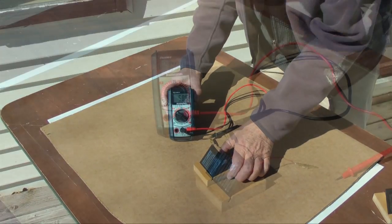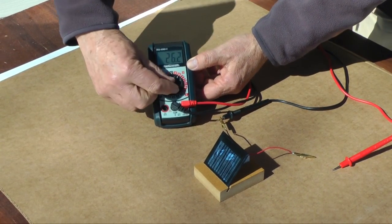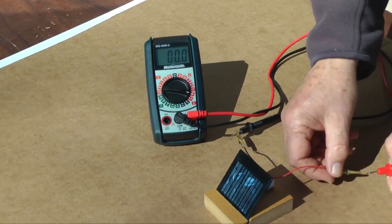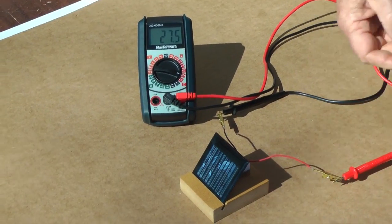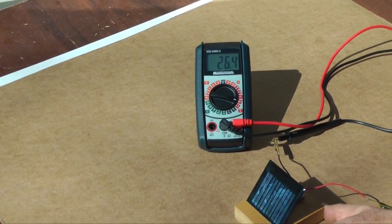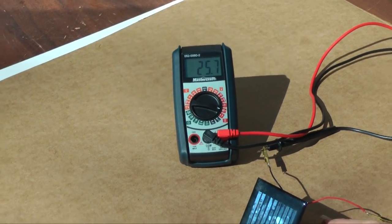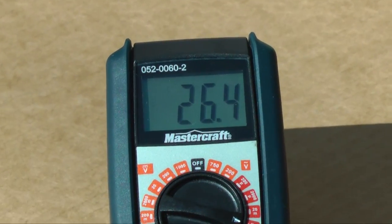To measure current, I set the meter to the 200 milliamp range. The panel produces 25 to 30 milliamps under direct sunlight.